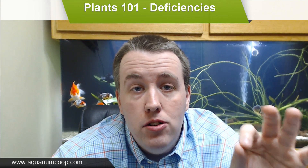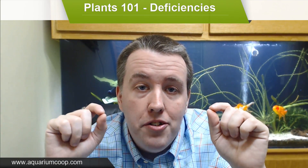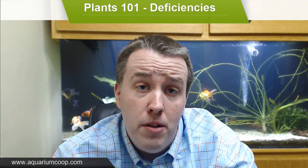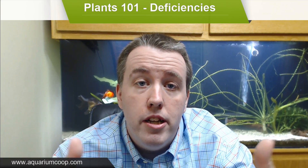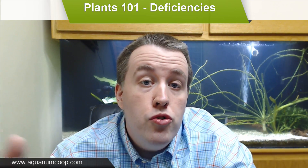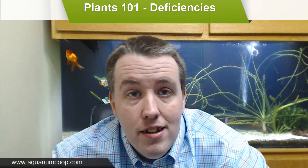Hi everyone, Cory from Aquarium Co-op. Today we're going to tackle plant deficiencies in this Plant 101 course to get you up to speed and hopefully teach you some things you didn't know and solve some problems for you. A lot of people run into deficiencies in their plants and have no idea it's going on until the plant starts dying. There would be signs for usually weeks ahead of time, but until you know what to look for, you don't see the problem — if it's not dead, in your mind it's alive, but we can still see illness.